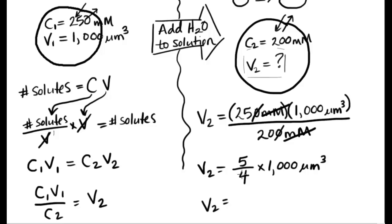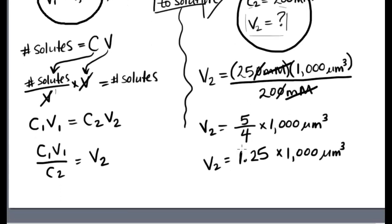And I do the calculation that I know 5 fourths is 1.25, because here's my four quarters, and then I've got a quarter left over, just like 25 cents, times that 1,000 micrometers cubed. And then finally, do the last step and find my final volume.